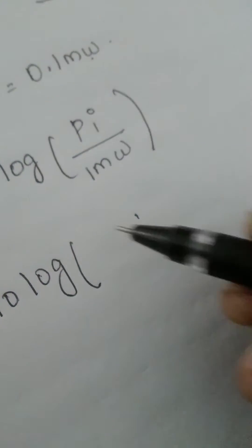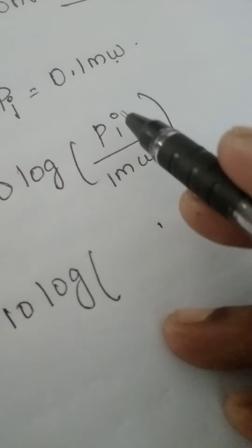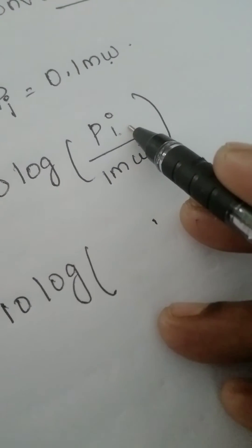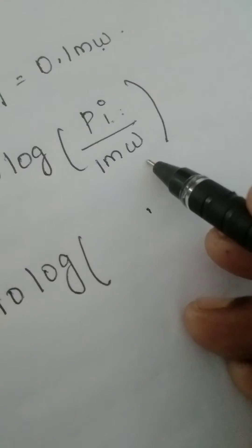So 10 log of your P i. Right? So this might be the P i or P not. Generally, P divided by 1 milliwatt.